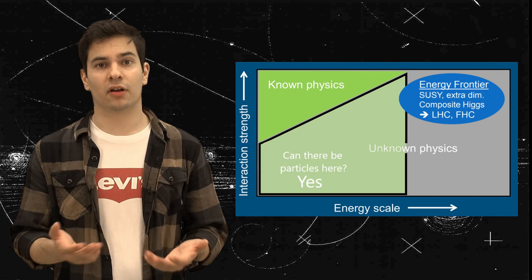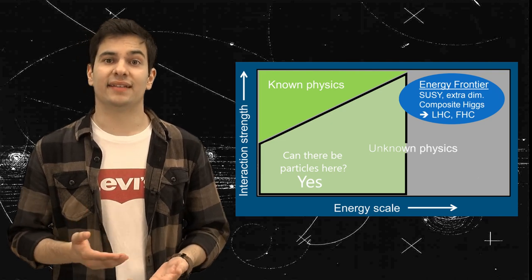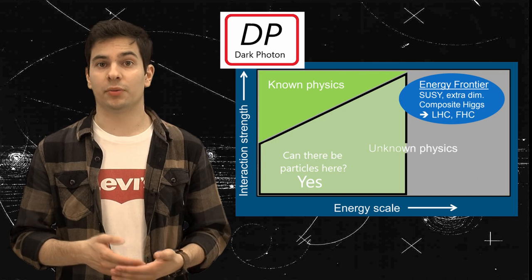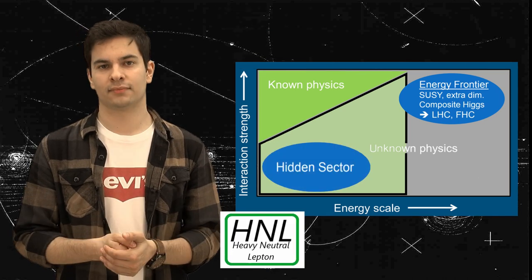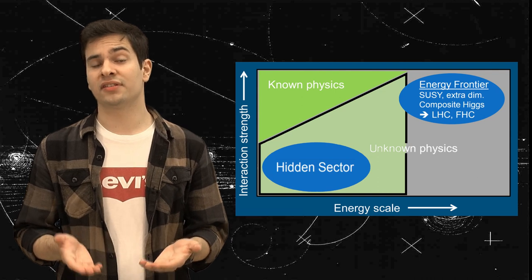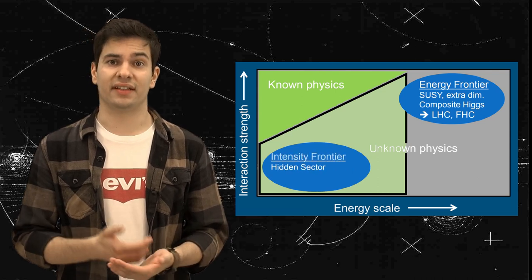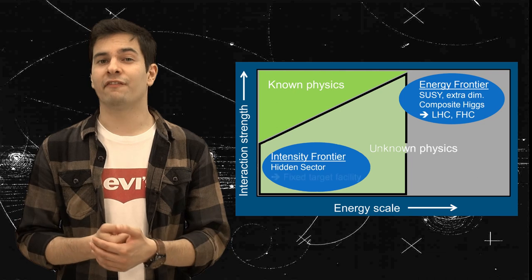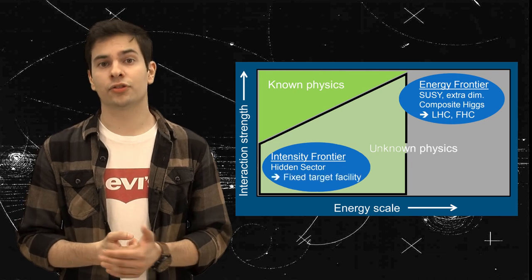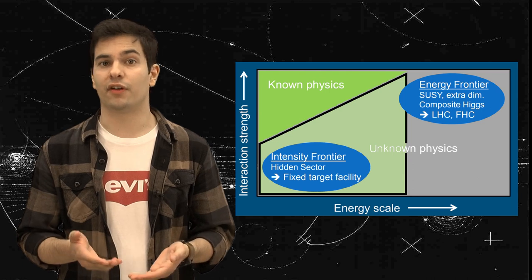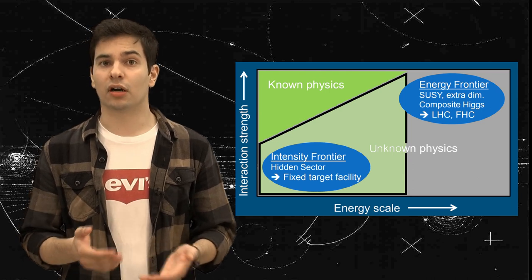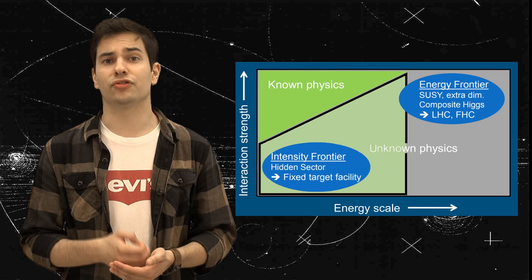Most of these beyond the Standard Model extensions predict particles that interact very feebly with the ones we know and as such we consider them to be in the hidden sector. This means that in order to see these particles we need to increase the intensity of our experiments and have very specific detectors that not only search for characteristic decays, which are expected to happen within very large distances, but also rule out all the undesired processes leading to zero background.